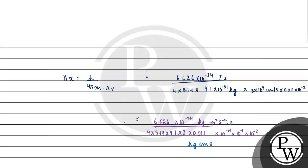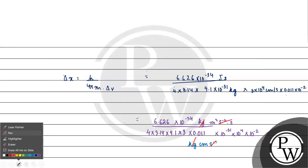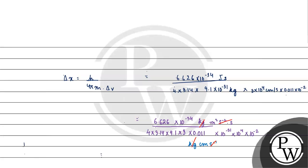We have kg·cm·s⁻¹ in the denominator; seconds cancel with seconds, and kg cancels with kg. The cm unit needs to be converted to meters: 1 cm = 10⁻² meters. Combining powers of 10 in the numerator: 10⁻³⁴ and the denominator has 10⁻³¹ × 10⁴ × 10⁻², giving a net power of 10⁻³⁴ / 10⁻²⁹ = 10⁻⁵, and the denominator numeric product is 4 × 3.14 × 9.1 × 3 × 0.011.